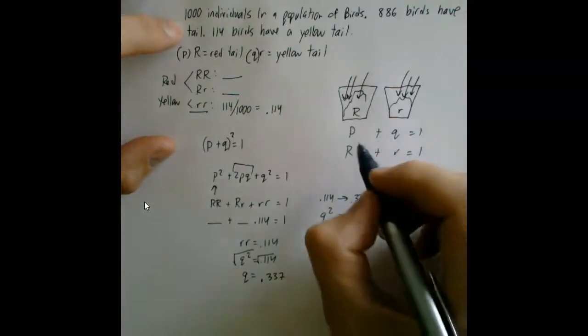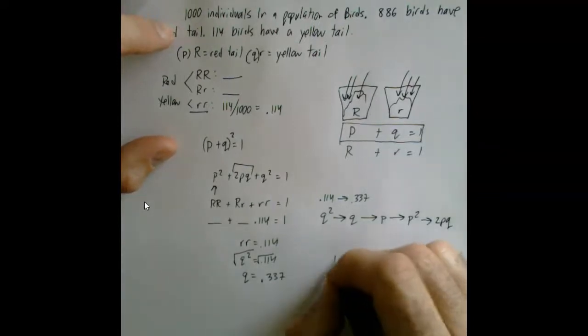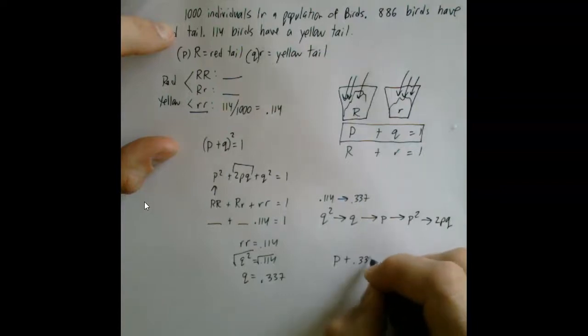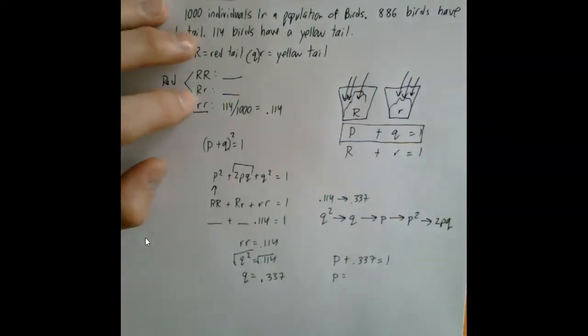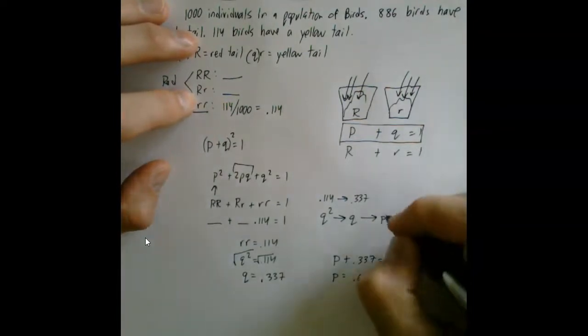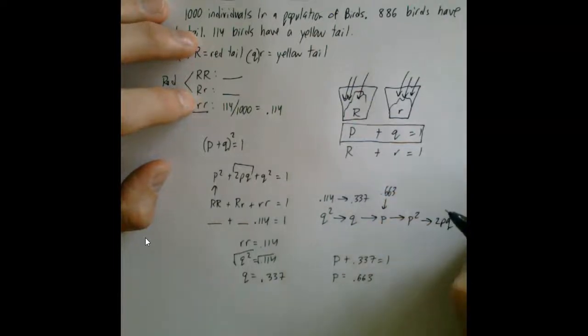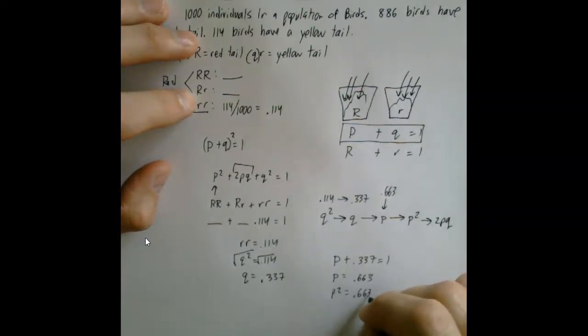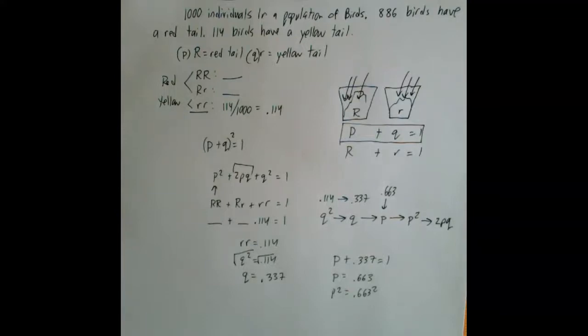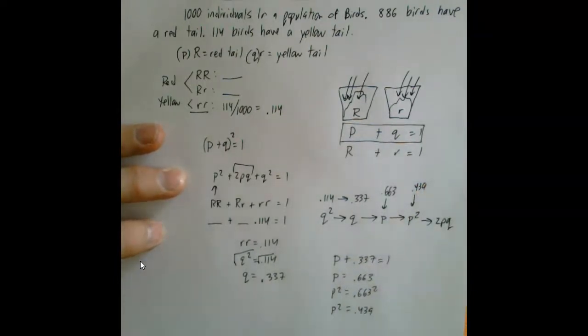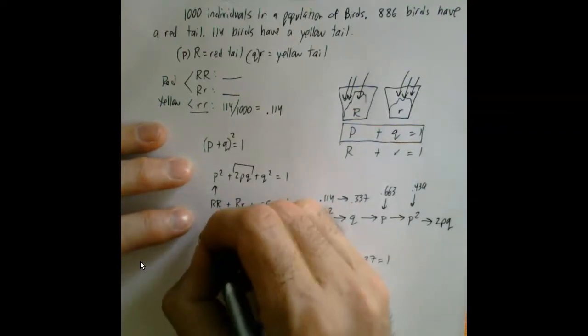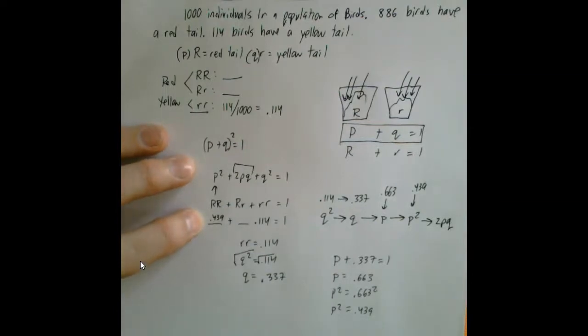As you know from before, P + Q = 1. So P + 0.337 = 1, we can then solve for P. You should get 0.663. Now if P is 0.663, you can easily find P² by just squaring the regular P. From that, an answer of 0.439. So P² is 0.439. We found out that P² is also equal to big R big R, so that value is 0.439. Basically 43.9% of the population is big R big R.